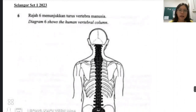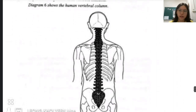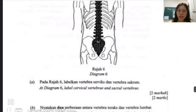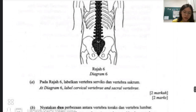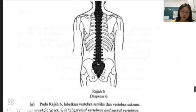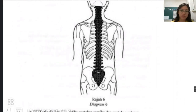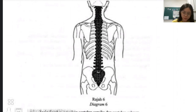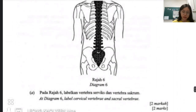Let's take a look at Diagram 6, which shows the human vertebral column. The question asks you to label the cervical vertebrae and sacral vertebrae. When doing labelling for biology, remember to use a pencil — or a pen if you're confident — and give a straight line when labelling. So which one is cervical and which one is sacral?